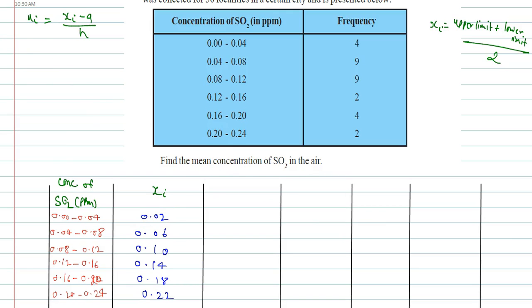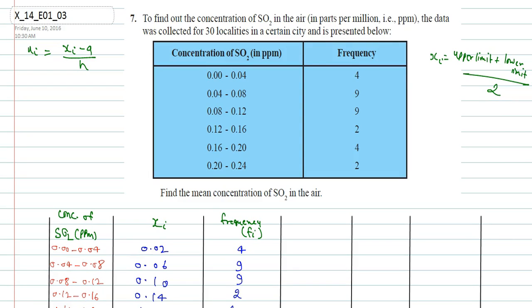Now I can write the frequency fi, which is given for each xi: 4, 9, 9, 2, 4, 2. Using the step deviation method here, I need to calculate ui which is xi minus a by h, where a equals the assumed mean.